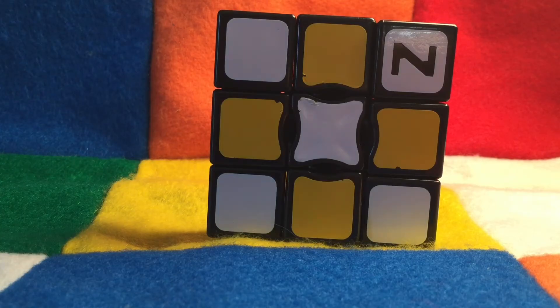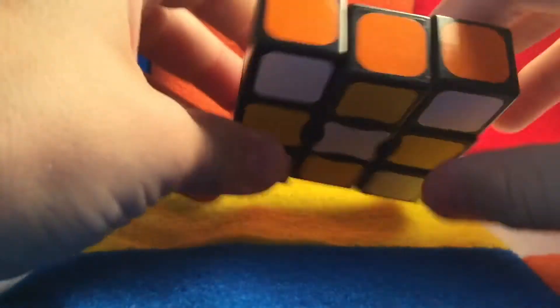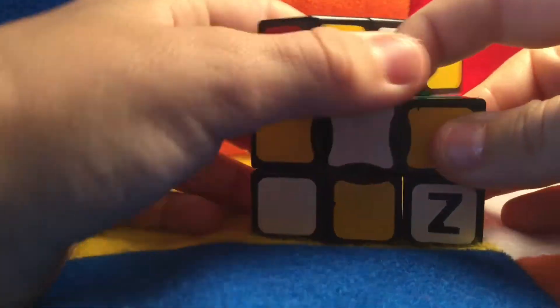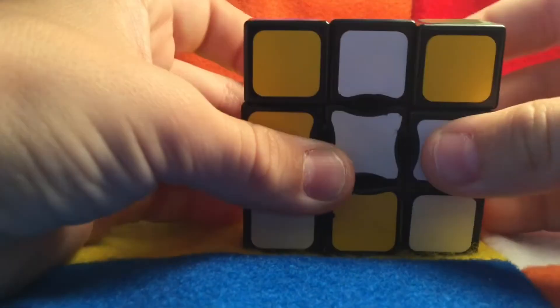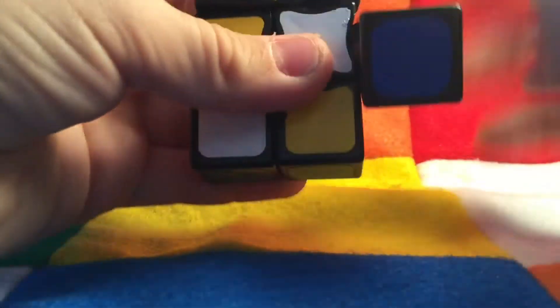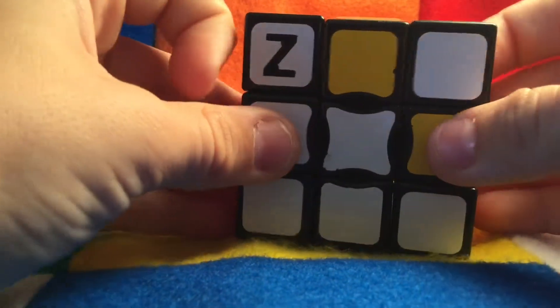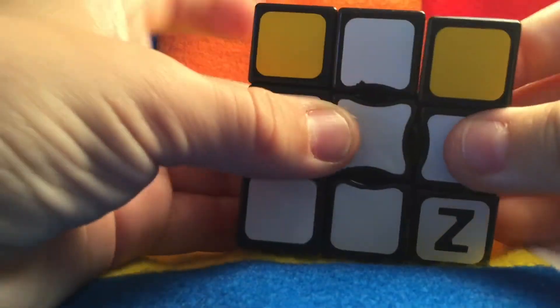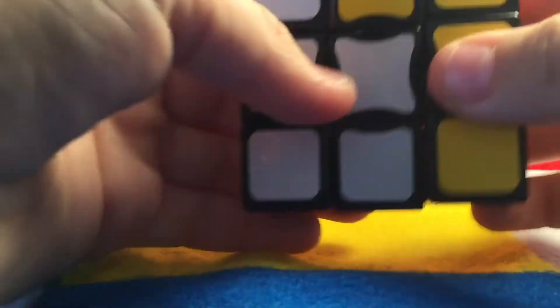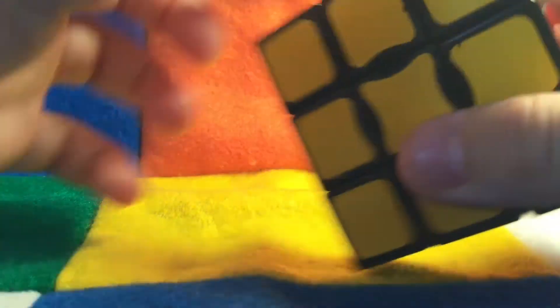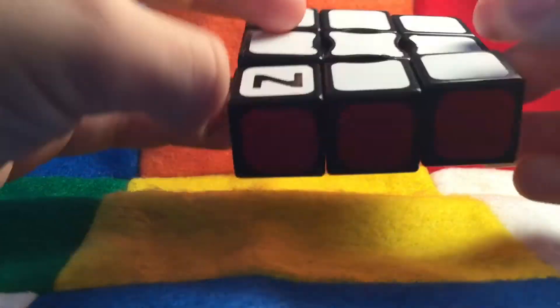Alright, so this is another ending case that you will get. It is very simple to solve. All you got to do is this algorithm: left, down, left, down, left, and down. Okay, now you got one of these little things solved, then you got to do that to the other one. Left, down, left, down, left. And that is the other case and that is how to solve it.